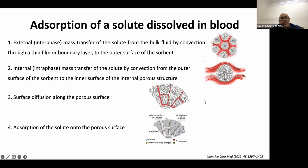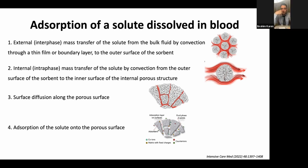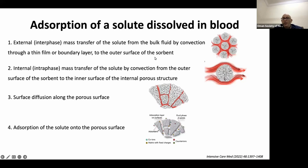Adsorption is based on four steps: first, the interface step — external and dependent on convection — as blood passes through the film or boundary layer to the outer surface of the sorbent; second, the interphase step, where solutes move by convection from the outer surface of the sorbent to its inner porous structure; third, diffusion along the porous surface; and fourth, the actual adsorption of the solute through the porous surface.